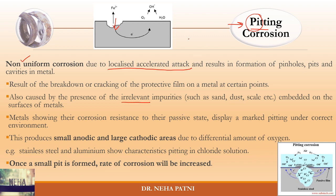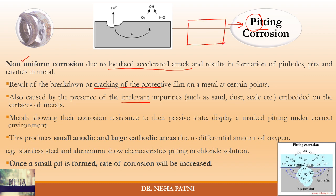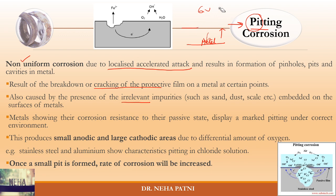If you have an entire metallic surface with some impurity left at one spot, that area becomes anodic because it is not in direct contact with the environment, while the surrounding area becomes cathodic. Similarly, if there is a breakdown or cracking of the protective film, the cracked portion — where metal is in direct contact with the environment — becomes the anode, while the film-covered area becomes the cathode.